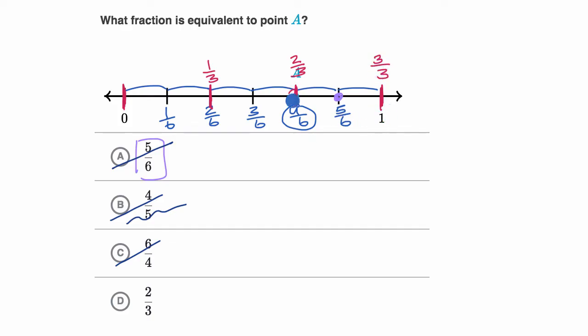And so point A, which is right over here, I'm writing over it. That is indeed equal to two thirds. You can see each jump of a third is equal to two sixths. So it makes sense that four sixths is equal to two thirds, or that two thirds is equal to four sixths. So I like this one.